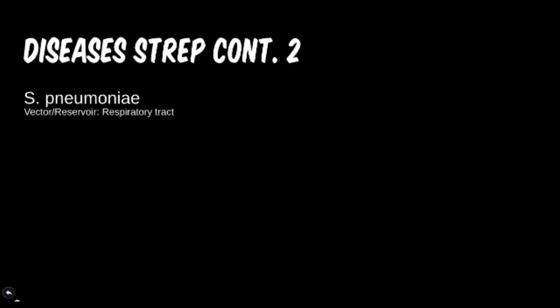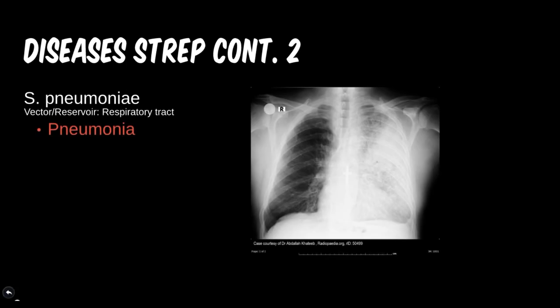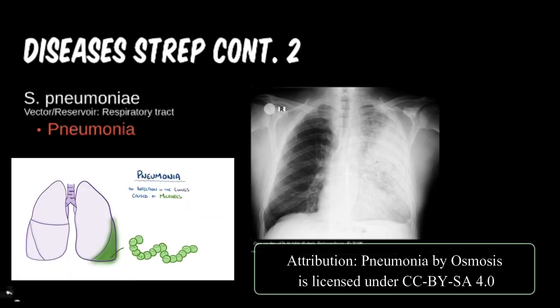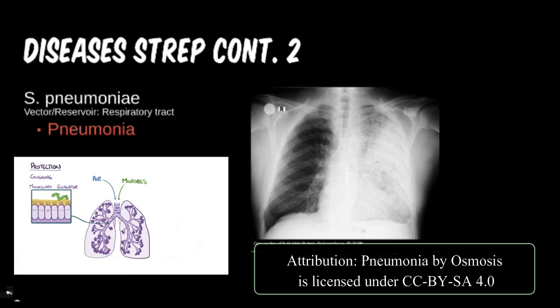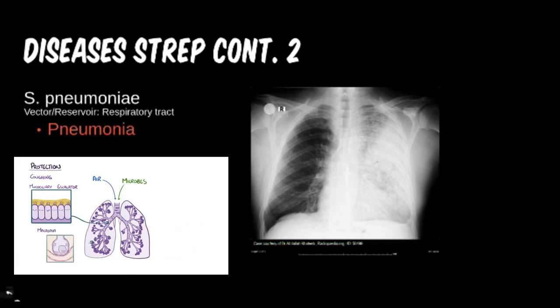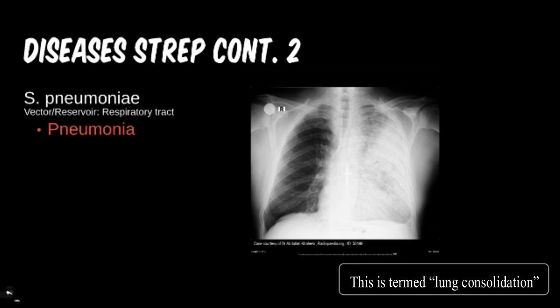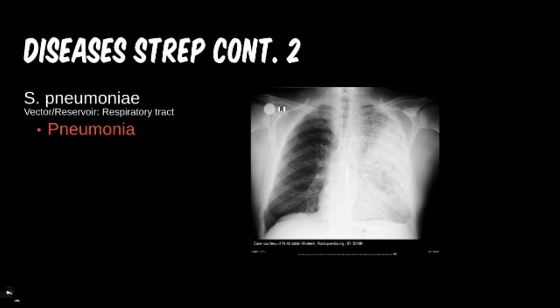With Streptococcus pneumoniae, the obvious disease is going to be pneumonia. The microbe colonizes the respiratory tract. Here we see a lung field on x-ray where the entire lung is cloudy — a healthy lung should be fairly clear, which appears black on an x-ray. Generally you don't see an infection to this degree, assuming it was caught early enough.